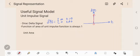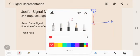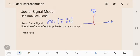And for this signal, the function of the area under the unit impulse function is always one. The integral from negative infinity to infinity for the unit impulse signal DT will always equal one.